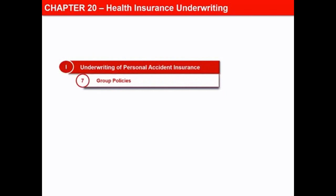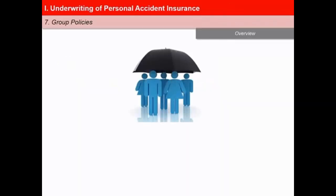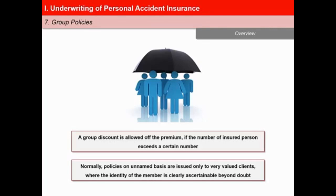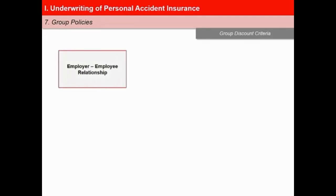In this next video of the lesson, Health Insurance Underwriting, we will learn about group policies under underwriting of personal accident insurance. A group discount is allowed off the premium if the number of insured persons exceeds a certain number, say 100. A group policy may be issued when the number is smaller, say 25, but without any discount. Normally, policies on unnamed basis are issued only to very valued clients where the identity of the member is clearly ascertainable and beyond doubt. Group policies should be issued only in respect of named groups. For the purpose of availing group discount and other benefits, the proposed group should fall clearly under any one of the following categories: first, employer-employee relationship, including dependents of the employee; second, pre-identified segments or groups where the premium is to be paid by the state or central government.